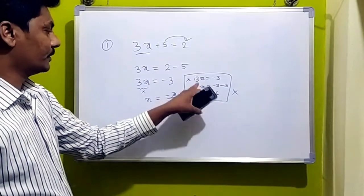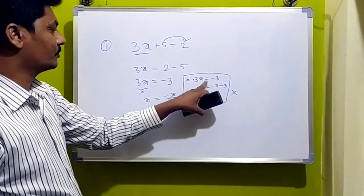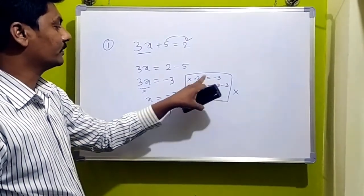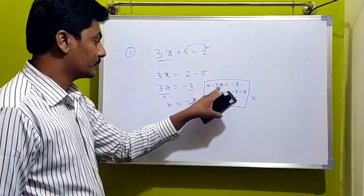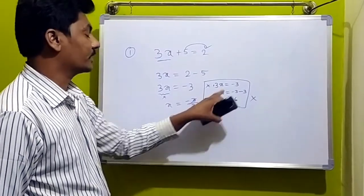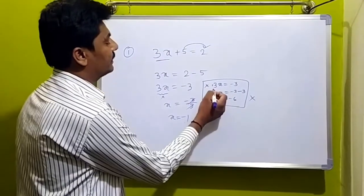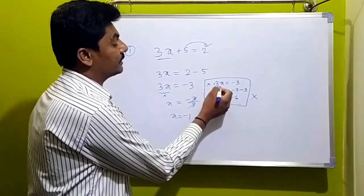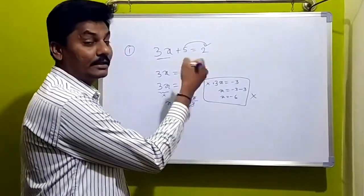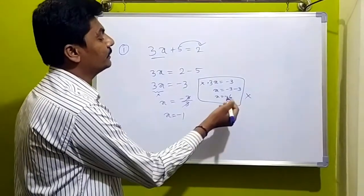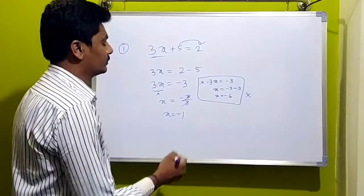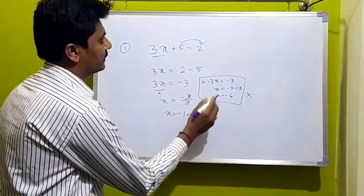So, plus 3x is equal to minus 3. Plus 3 is equal to minus 3. We have a relationship: 3 is equal to x is equal to 2. So, into the division — this is correct.